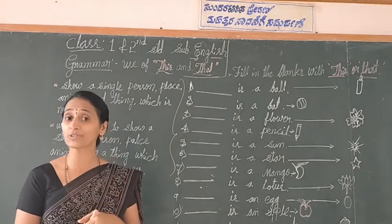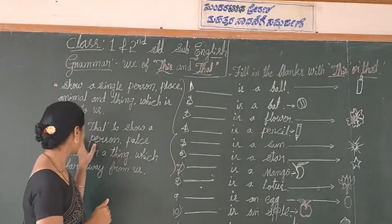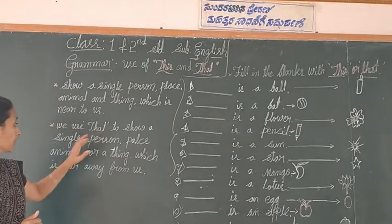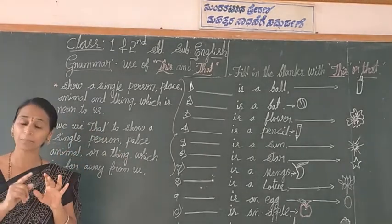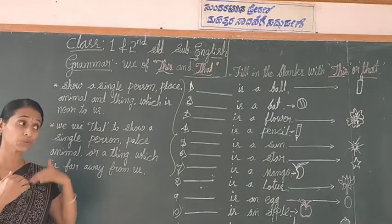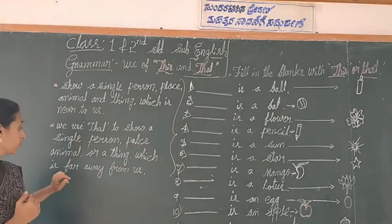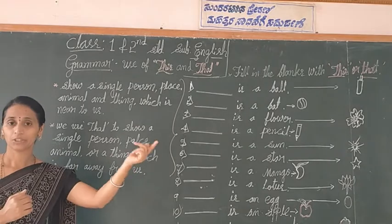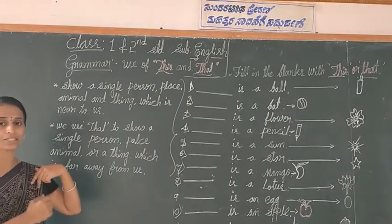When do you use 'that'? We use 'that' to show a single person, place, animal, or thing that is far away from us.